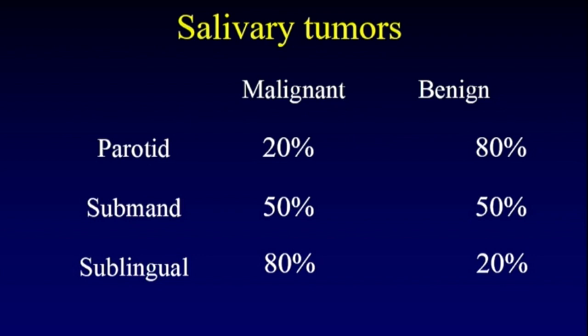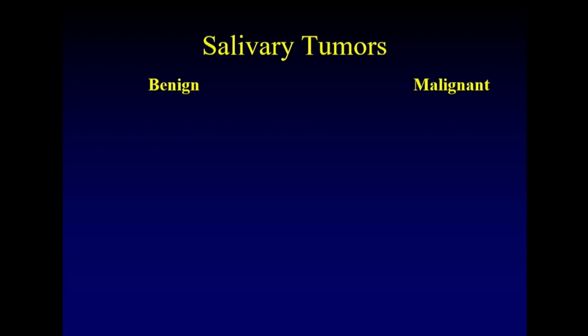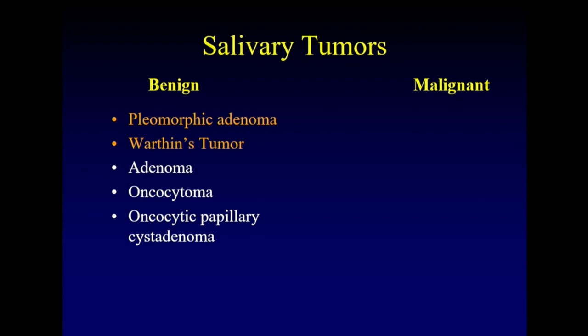What sort of histopathology are we encountering with salivary tumors? In the benign category, there is a long list, but two are really worth knowing: pleomorphic adenomas and Warthin's tumors. There are many others — adenomas, oncocytomas, oncocytic papillary cystadenomas — but pleomorphic adenoma and Warthin's tumor are the most important.